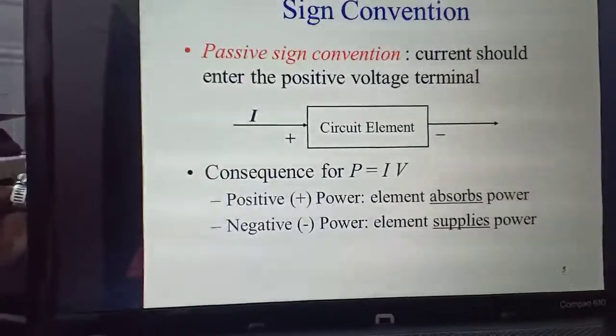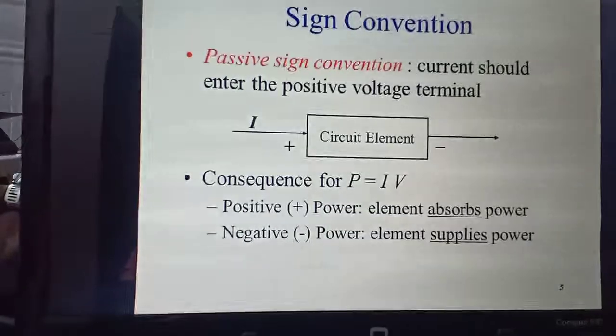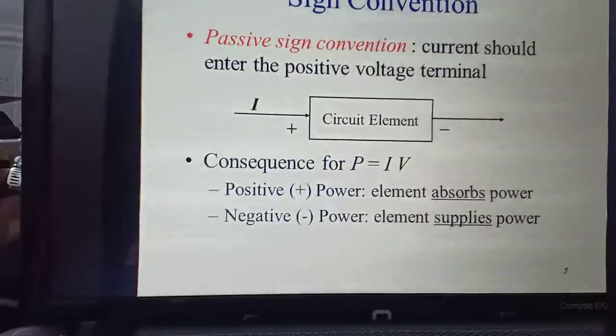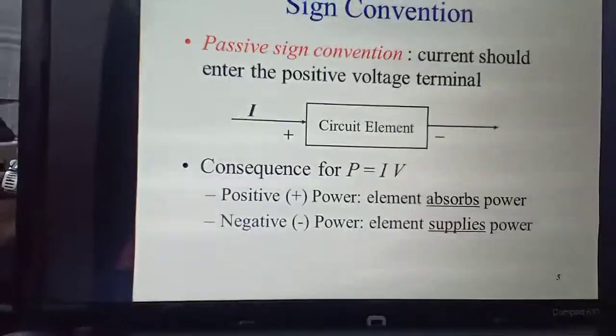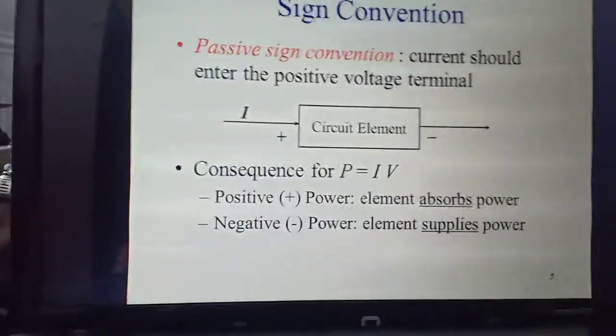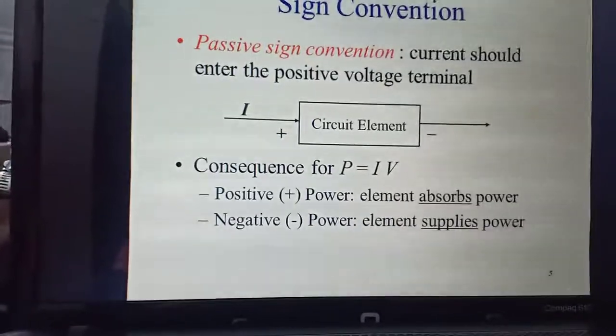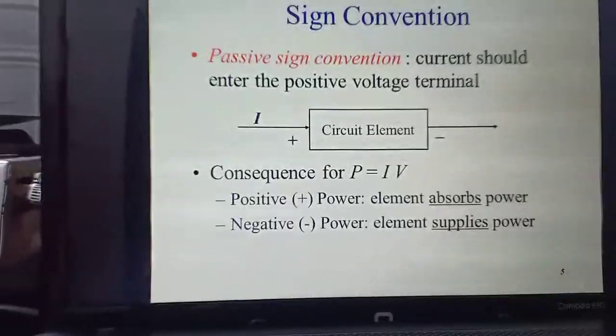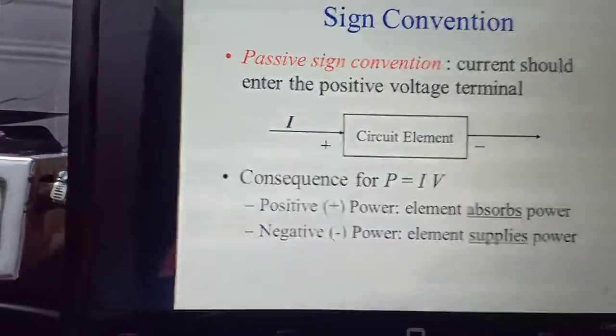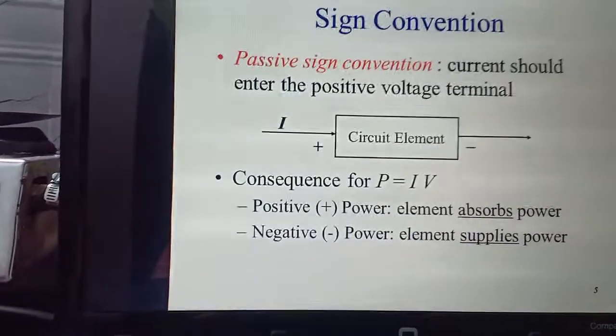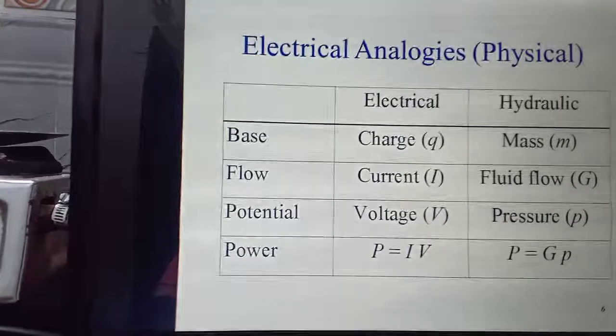Circuit elements we will be studying later on, but I will tell you now. These are resistors, inductors, and capacitors. These three types of circuit elements we have. So current enters in the circuit element from the positive voltage terminal and leaves from the negative. Consequences for power: positive power means the circuit element is absorbing power. Negative power means the element is supplying power.